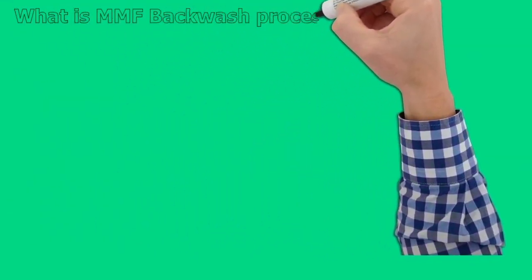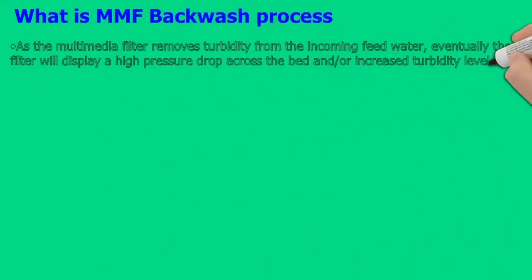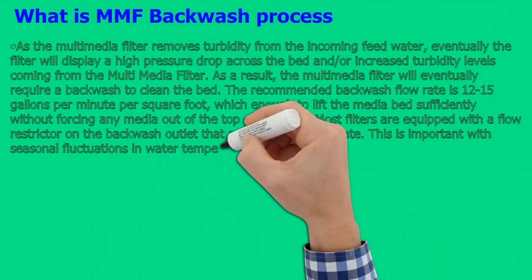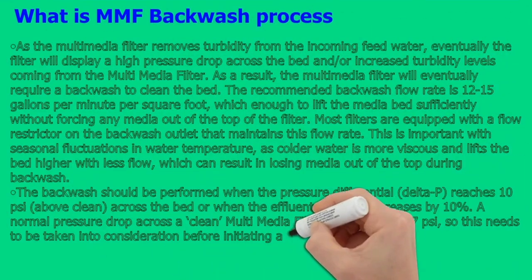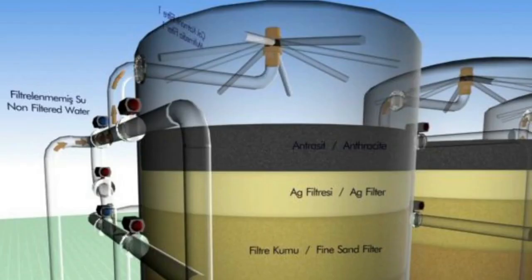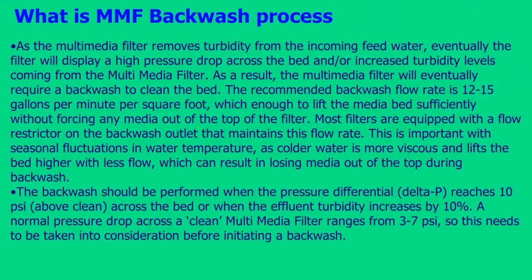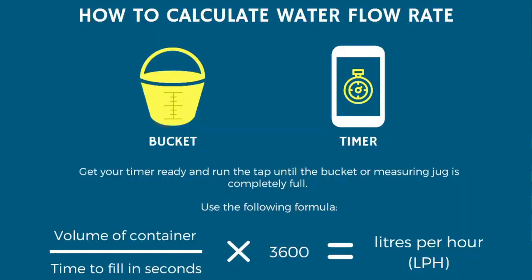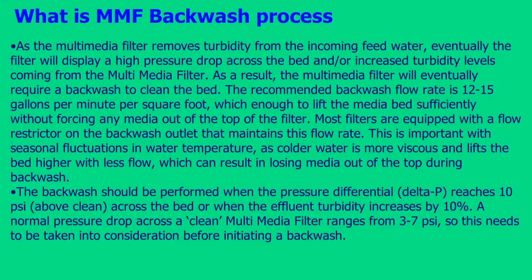What is the MMF Backwash Process? As the multimedia filter removes turbidity from the incoming feed water, eventually the filter will display a high pressure drop across the bed and/or increased turbidity levels coming from the multimedia filter. As a result, the multimedia filter will eventually require a backwash to clean the bed. The recommended backwash flow rate is 12–15 gallons per minute per square foot, which is enough to lift the media bed sufficiently without forcing any media out of the top of the filter.